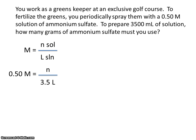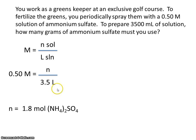So then we'll solve for N. When we solve for N — N means moles — we'll have 1.8 moles of ammonium sulfate.